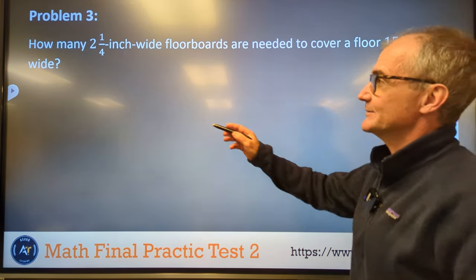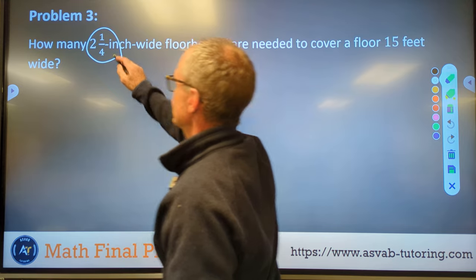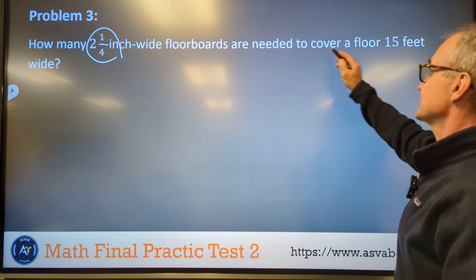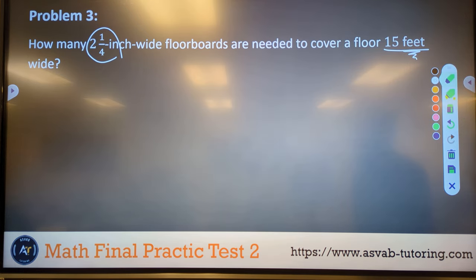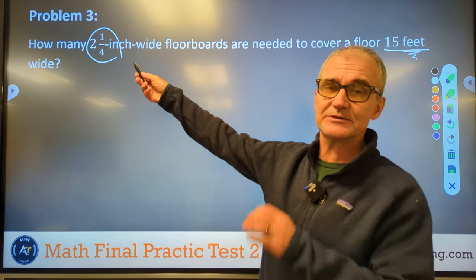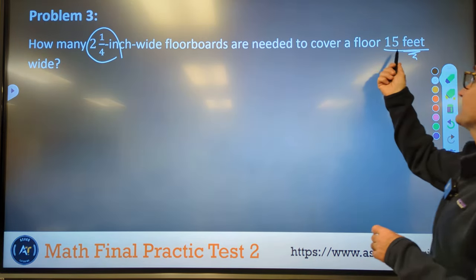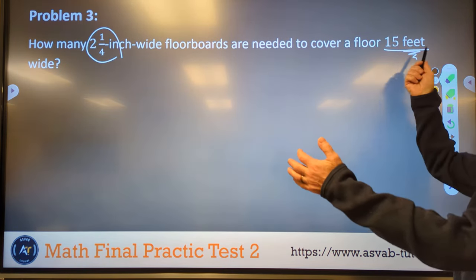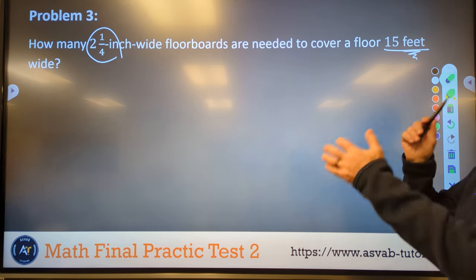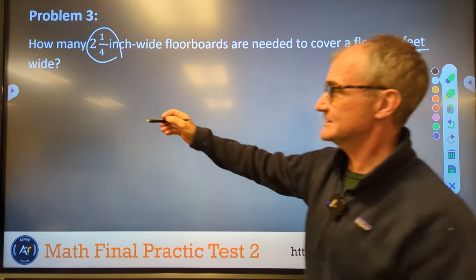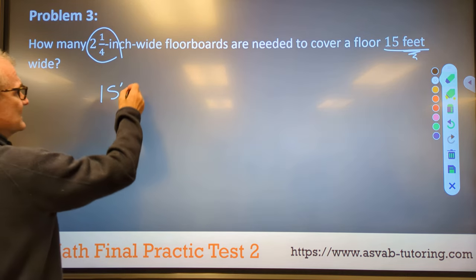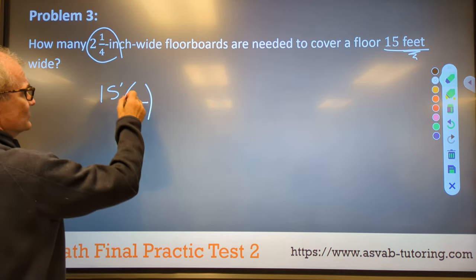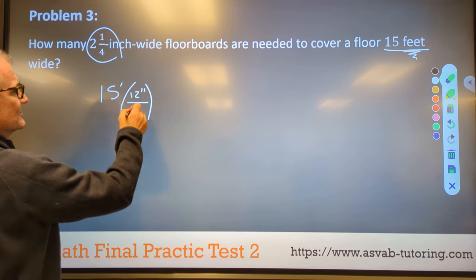Problem three, how many two and a quarter inch wide boards are needed to cover a floor 15 feet wide? So I got a couple of things going on here. My board width is two and a quarter inches and the actual floor is in feet. So I got to convert to have one unit. First thing I'm going to do is take that 15 feet. I know that 12 inches equals one foot.